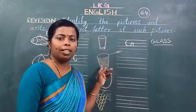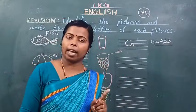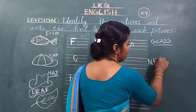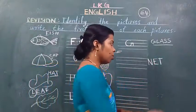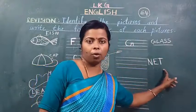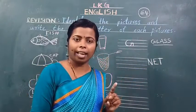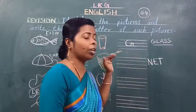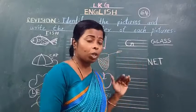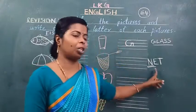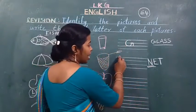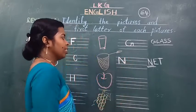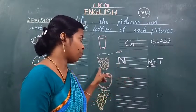And see the next picture. What is this? This is a net. Net ka spelling kya hai? N-E-T net. Spell the word net — N-E-T net. Idhar haam koon sa letter likhenge? N likhenge. Ye hai net ki spelling — N-E-T net. Idhar pahla ashar N hai. Dekho N kaisa likhena — standing line, slanting line, standing line. This is N — N for net.